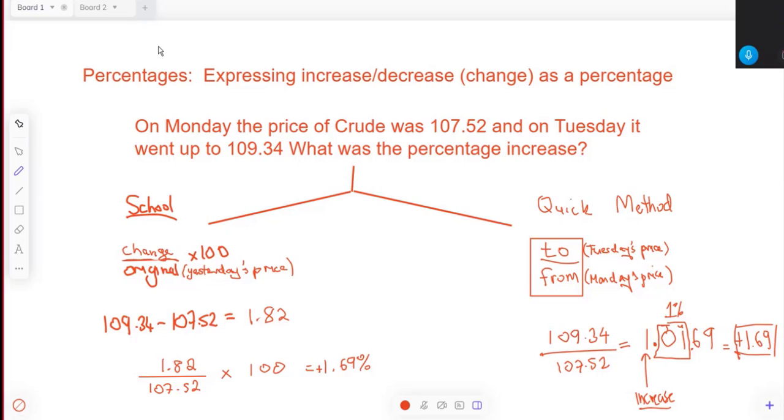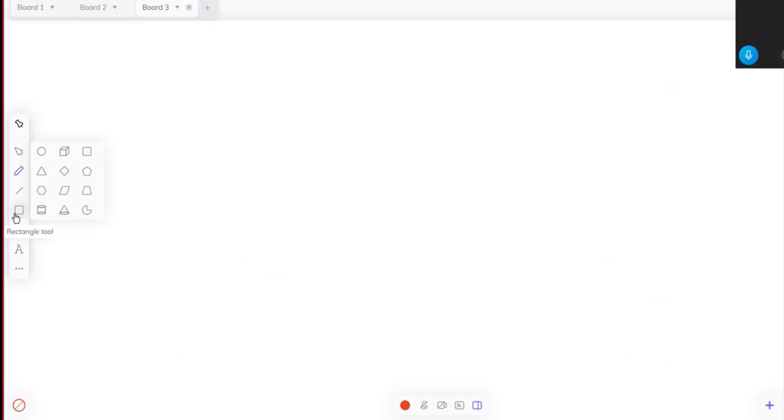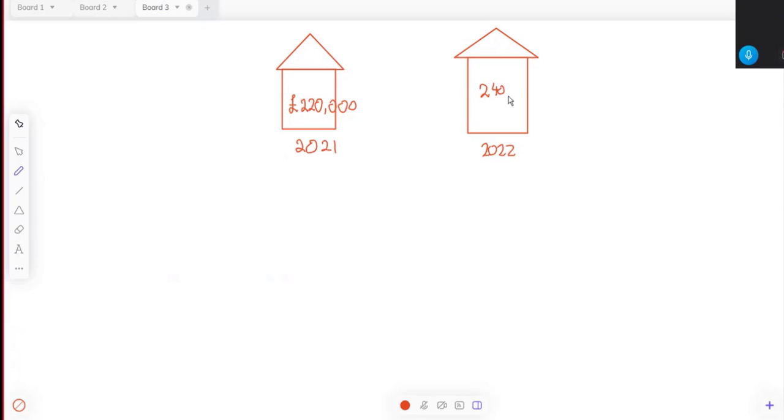Let's do another one. We'll do it in terms of house prices this time. So we've got a house at 220,000 in 2021, and in 2022 it's gone up to 240,000. What is the percentage increase?